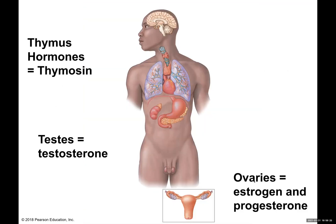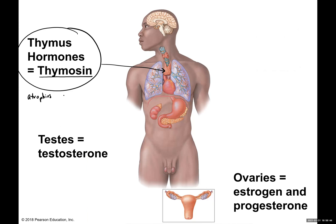The thymus is classified as a secondary structure. It produces the hormone thymosine. Remember, it atrophies during adulthood — meaning it slows down its function and stops producing thymosine as we get older.